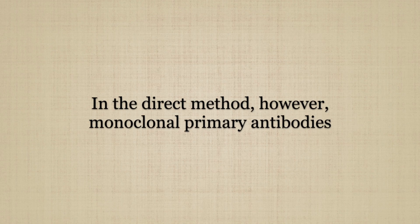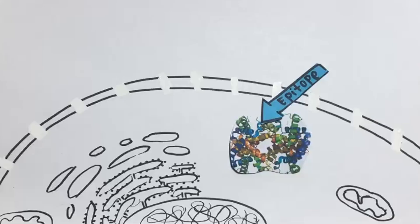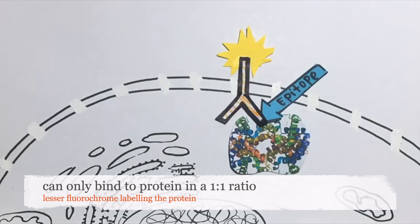In the direct method, however, monoclonal primary antibodies can only bind to the protein in a one-to-one ratio, resulting in lesser fluorochrome labeling the protein.